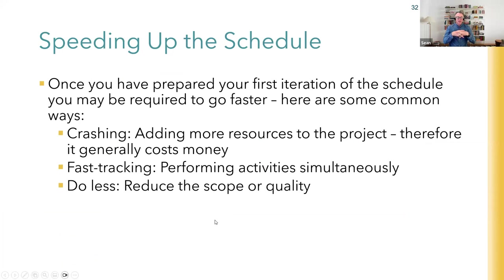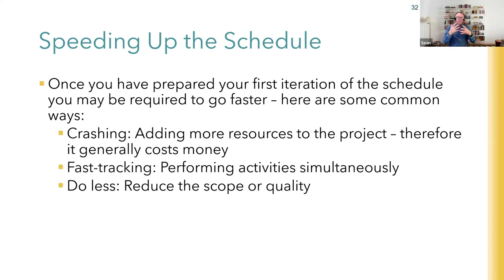Years ago I went to a project sponsor and said it would take 27 weeks to complete the project. He said they needed it done in 20. I explained we'd gone through activity lists, duration estimates with the team, network diagrams - it's 27 weeks, defensible. He insisted it had to be done in 20. If someone comes to you and says they appreciate your wonderful network diagram but need it faster - which happens often - you generally have a few choices.